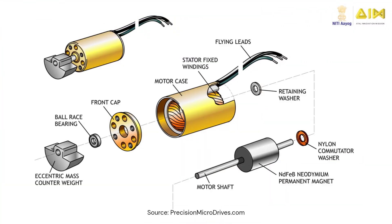A vibration motor has several key parts that work together to create vibrations. These include the motor case that houses all the other components, a rotor made up of a shaft attached to a permanent magnet and an unbalanced weight — also called eccentric mass counterweight. The stator with copper windings helps create a magnetic field to move the rotor. There are also ball bearings to support smooth rotation, flying leads or wires to supply electrical connections to the motor, and front and back motor cover plates with washers to support the rotor.